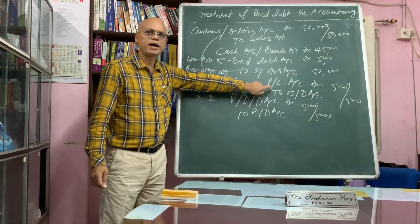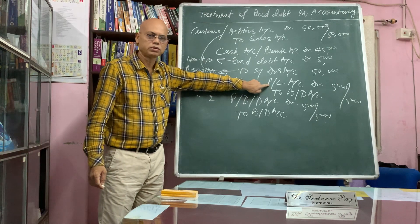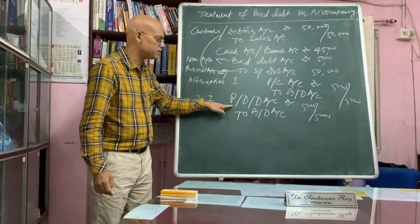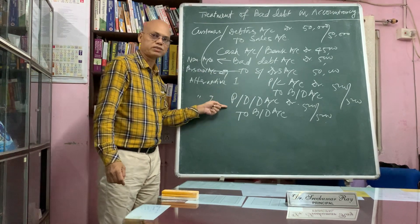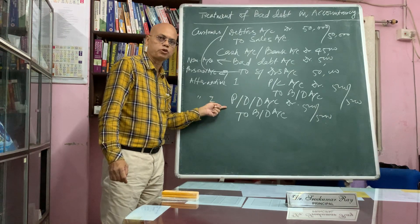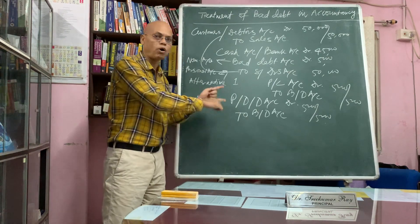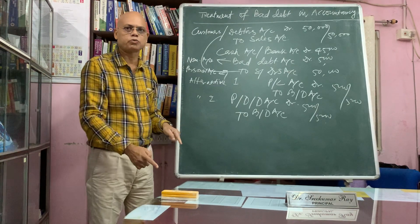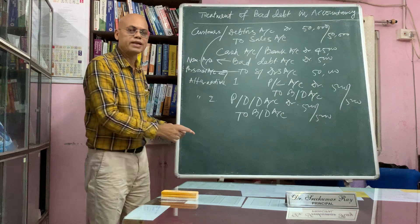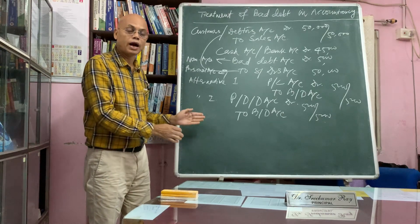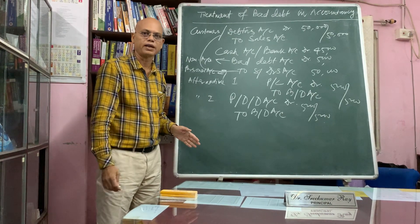In method one, bad debt is directly charged to the P&L account. In method two, bad debt is first charged to the provision for doubtful debts account. Then from the provision for doubtful debts account, the closing balance will be either debited or credited to the P&L account.